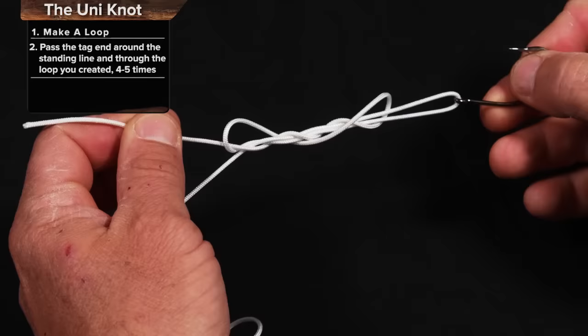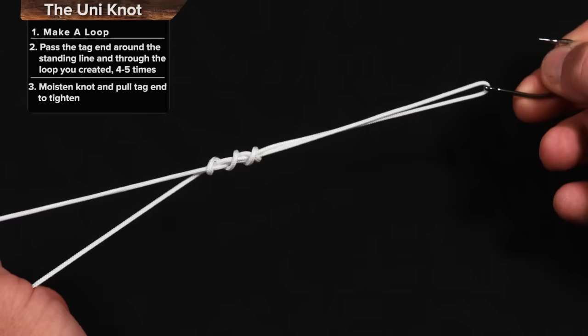Then I'm going to hold the tag end and I'm just going to start pulling tight. I'm not concerned about how big this loop is getting. I don't want to fish with a loop that big, but it doesn't really matter.